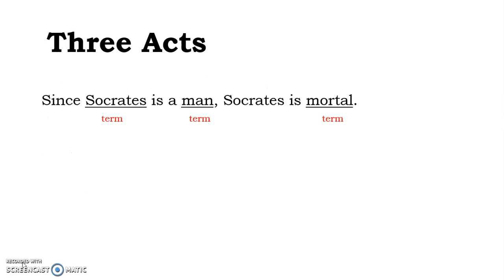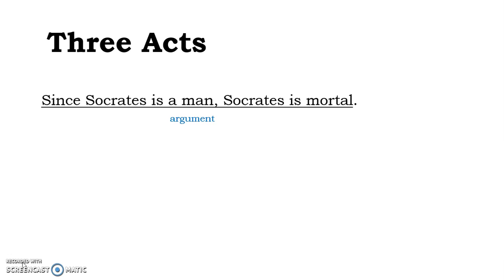This may make sense if I put it visually. 'Since Socrates is a man, Socrates is mortal.' Here I have underlined terms — individual words. But I also have words forming assertions about Socrates: Proposition 1 and Proposition 2 — 'Socrates is a man' and 'Socrates is mortal.' Taken all together with the word 'since,' we have an argument explaining why Socrates is mortal.